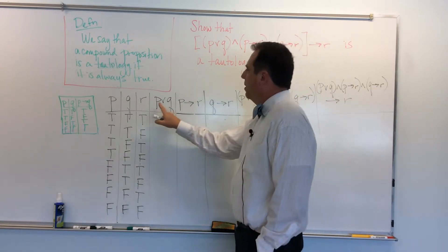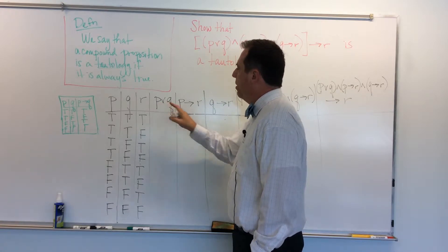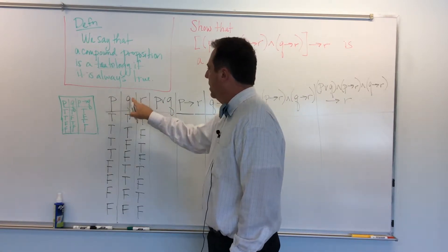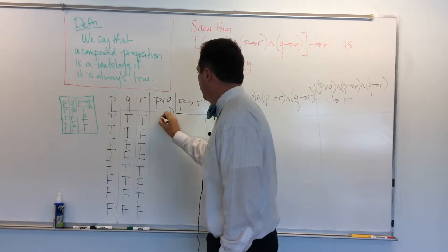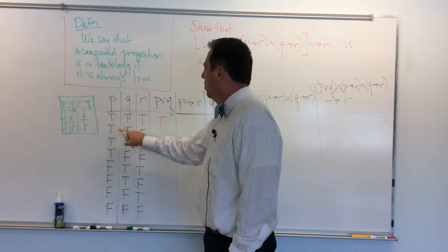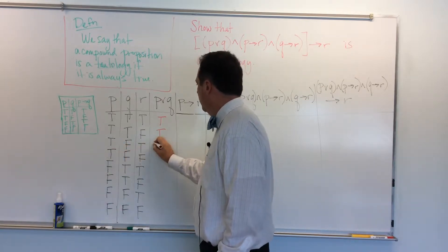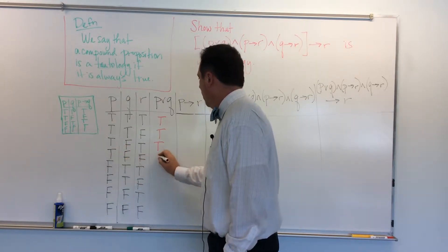Alright, first thing is we have to figure out the truth value of P or Q, and so here's P, and here's Q, so true or true is definitely true. True or true is true. True or false is true. True or false is true.